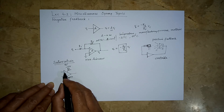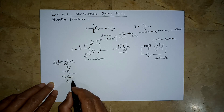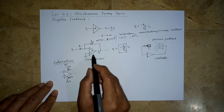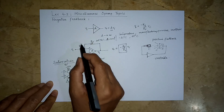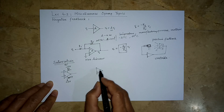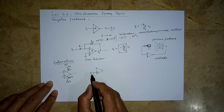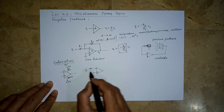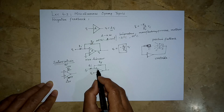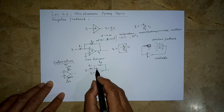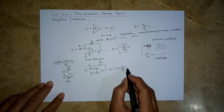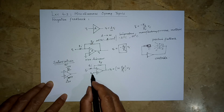We have the non-inverting input, the inverting input, and the output voltage pin. Let us look at the non-inverting amplifier configuration to eliminate the negative sign and simplify things. The input is at the non-inverting terminal, and VO equals (1 + RF/RI) times VI.